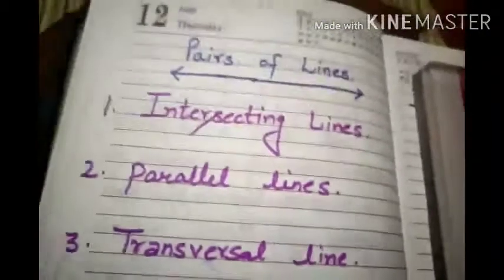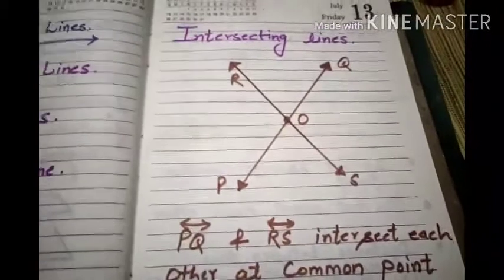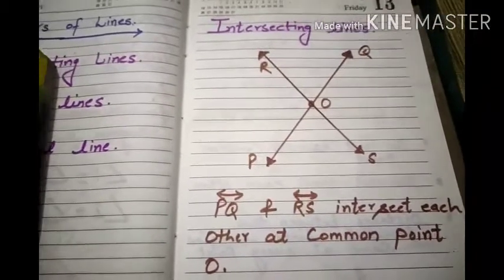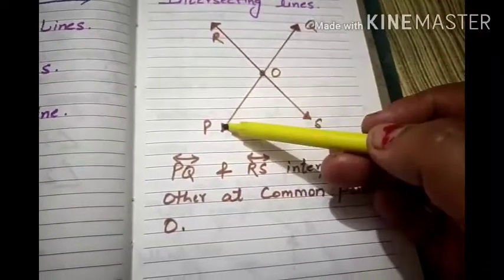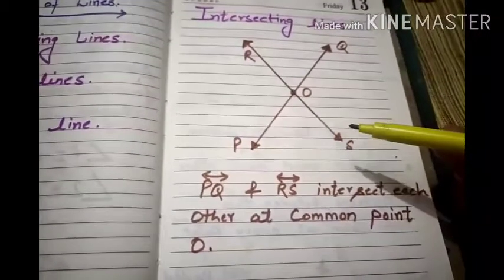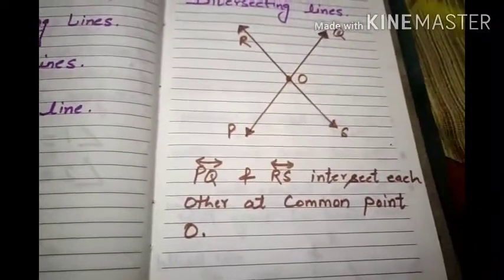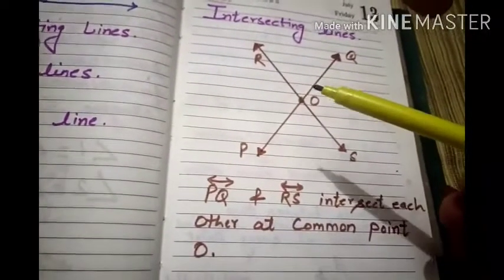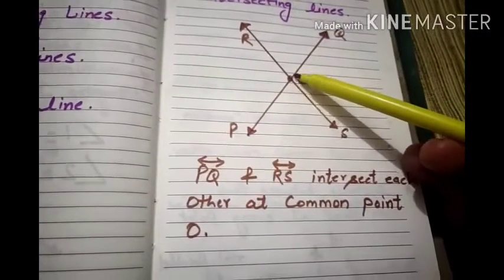First of all, I will tell you about intersecting lines. Intersecting lines: two lines intersect each other if they have a common point. Here PQ is a line, RS is also a line. A line has no fixed ending points. Here are two lines in which two lines intersect each other if they have a common point. So this common point is O.